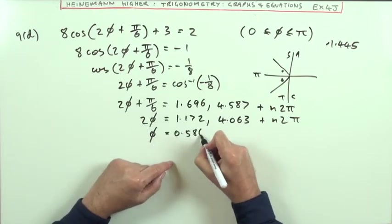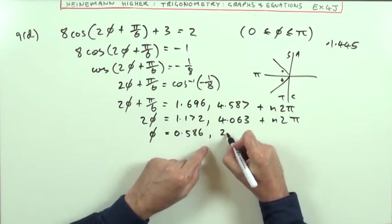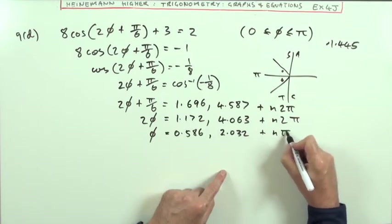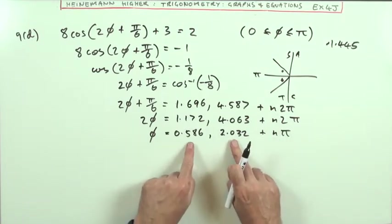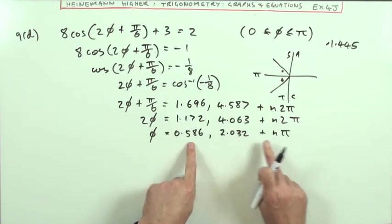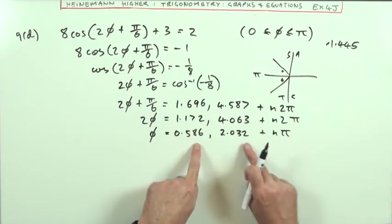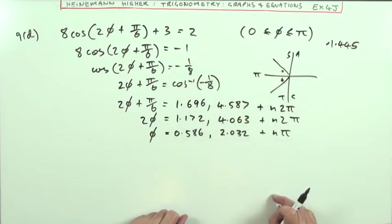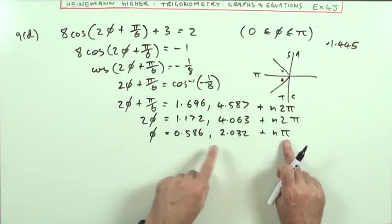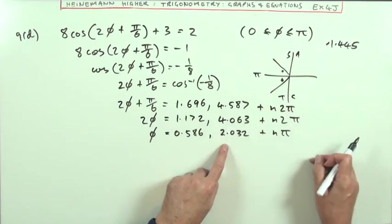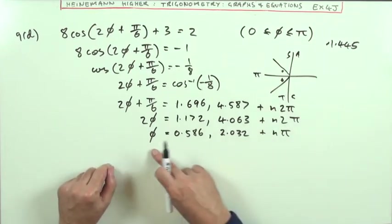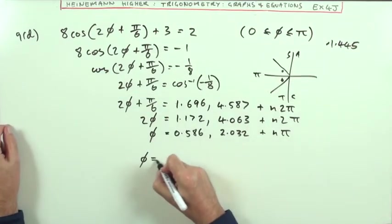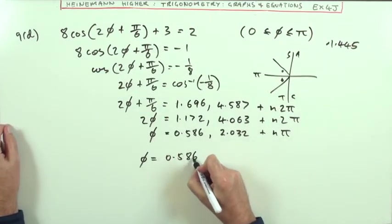Dividing by 2 gives 0.586 and 2.032, plus n lots of π. Adding 3 onto either takes it beyond π, and subtracting makes them negative, so those are the only two answers within that interval. So φ is 0.586 radians and 2.032 radians.